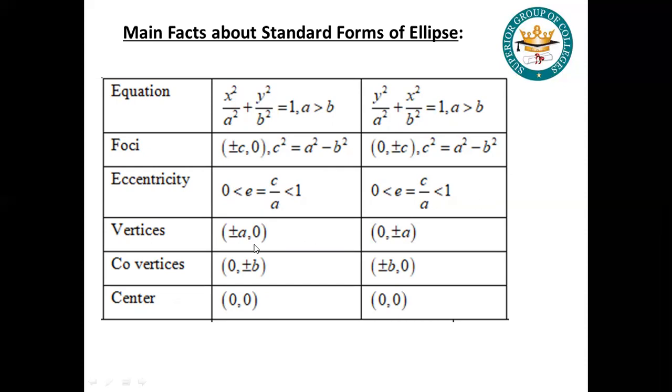The vertices are (±a, 0), so co-vertices are (0, ±b). And for the other, vertices are (0, ±a) and co-vertices are (±b, 0). The center of a standard ellipse will be (0, 0), the origin.